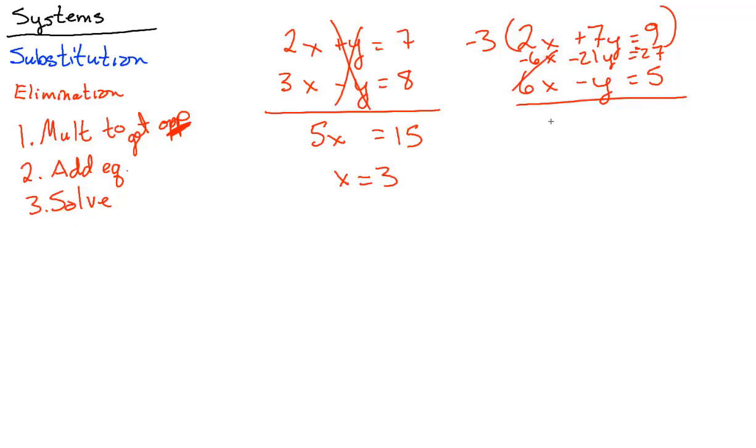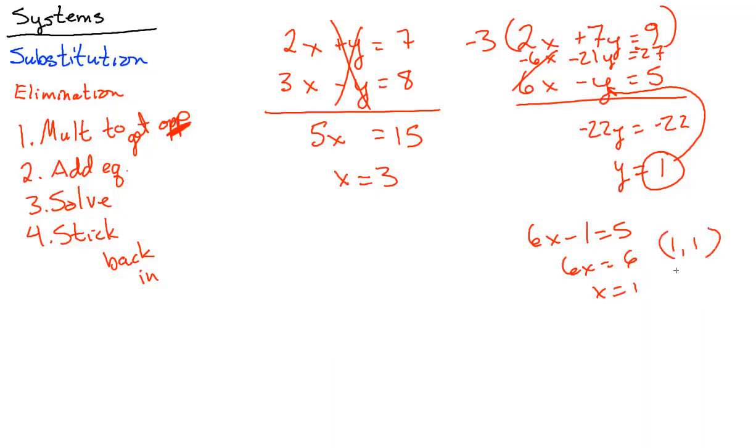So we now have no x's and we get negative 22y equals negative 22. Y equals 1. And then step four, stick back in. Stick y equals 1 in wherever you want it. 6x minus 1 equals 5. Add 1, we get 6x equals 6, and x equals 1. So we have the x and the y. That gives us 1, 1.